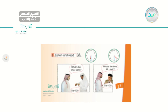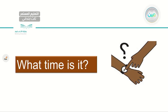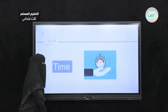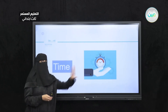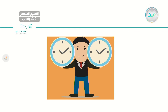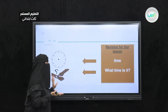Now let's go to exercise 5: Listen and read. Asking for the time we have different ways. Perhaps by saying: What's the time, Sammy? It's 6:30 or it's half past six. What's the time, Mr. Jack? It's 4:30 or it's half past four. Both are correct. By asking this question over and over I come to know the time. Look at this picture — the first thing that comes to my mind is: time is gold. We should use our time wisely.